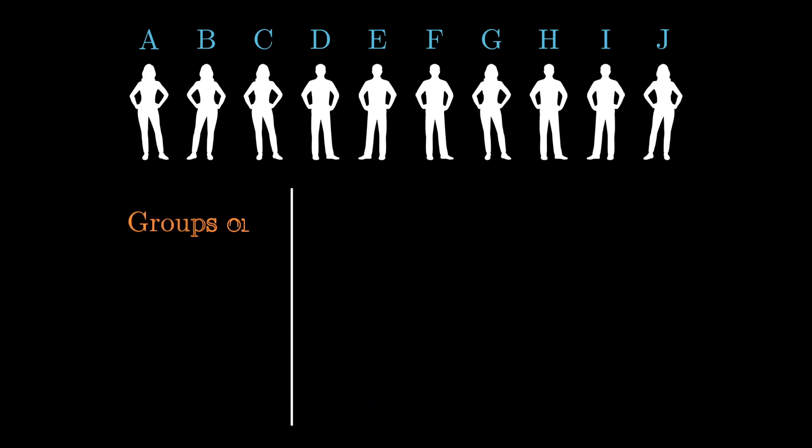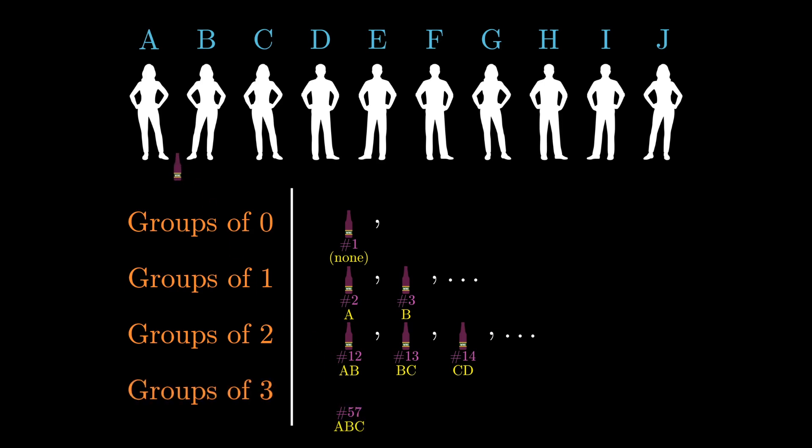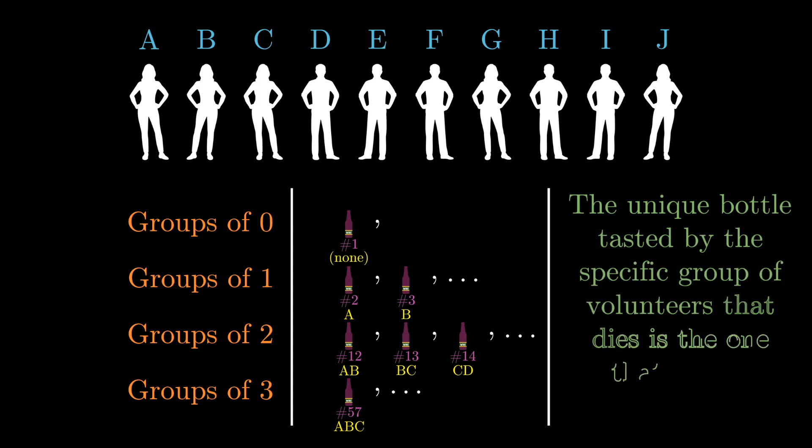This is the same thing as, say, making nobody taste the first bottle, volunteer A taste the second, volunteer B taste the third, and so on. And then you make volunteers A and B taste the 12th bottle, B and C taste the 13th, C and D taste the 14th, and so on until you exhaust every possible pair of tasters. And then you move into groups of three, so that, I don't know, maybe A, B and C taste the, I think it would be the 57th bottle. But anyway, you keep repeating this process. And finally, the unique bottle tasted by the specific group of volunteers that dies is the one that's been poisoned.